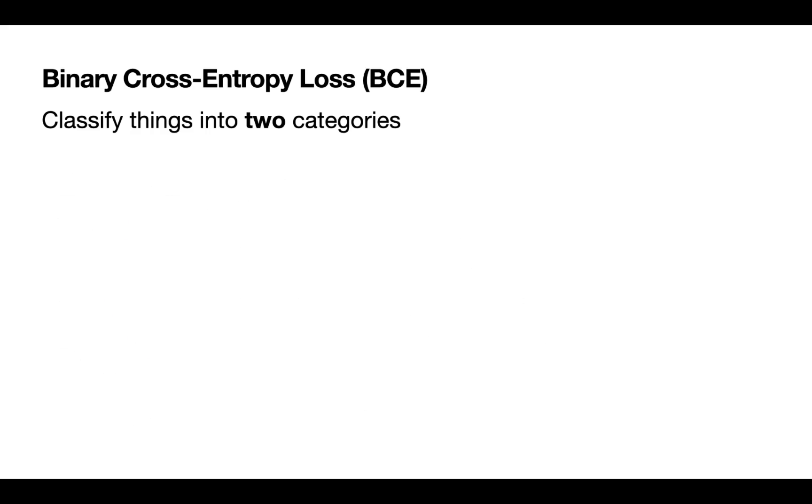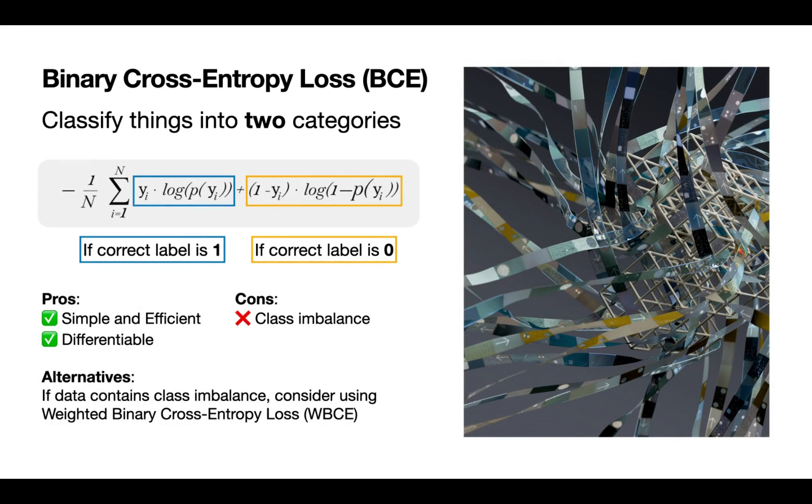Putting all of this together, we have this formula right here. It just takes these two parts to say when the correct label is one in the blue box, we're going to keep the log of the probability we're predicting it to be one. Then in the orange box, if the correct label is one, that other term is just going to go away.